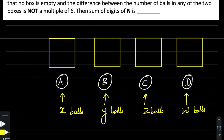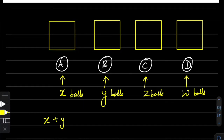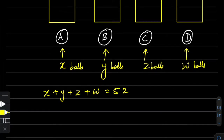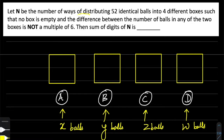First of all, we have to remember that X, Y, Z, and W must all be greater than or equal to 1, because no box can be empty. The condition we have to keep is that the difference between the number of balls in any two boxes should not be a multiple of six.